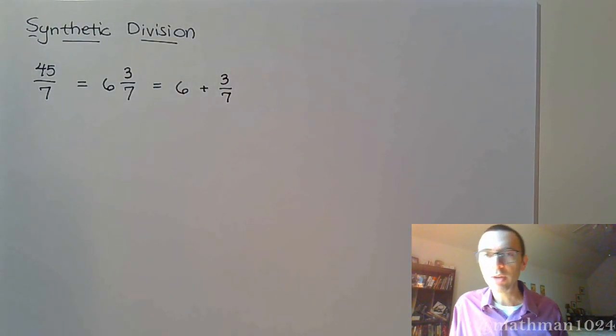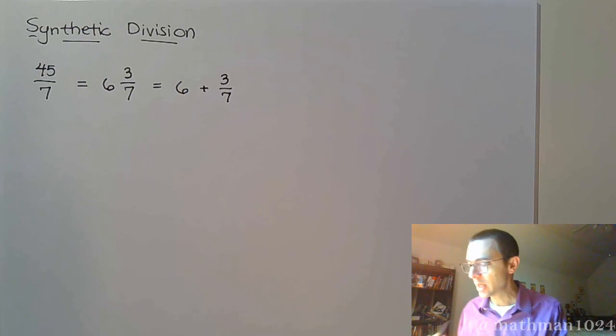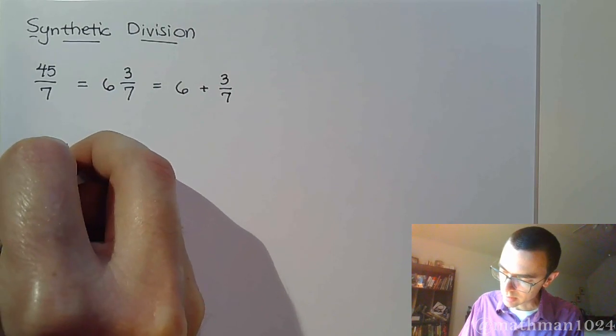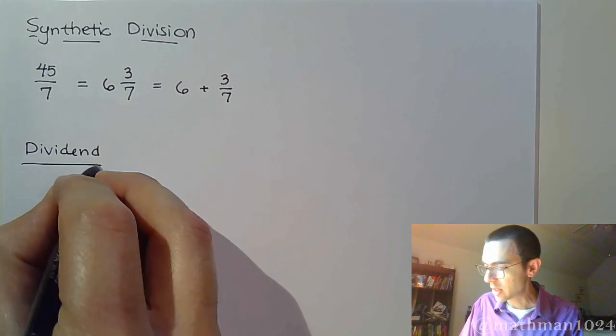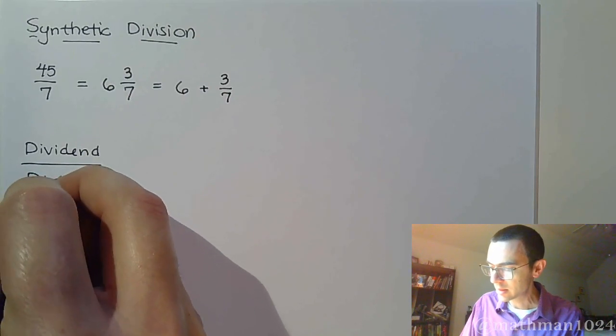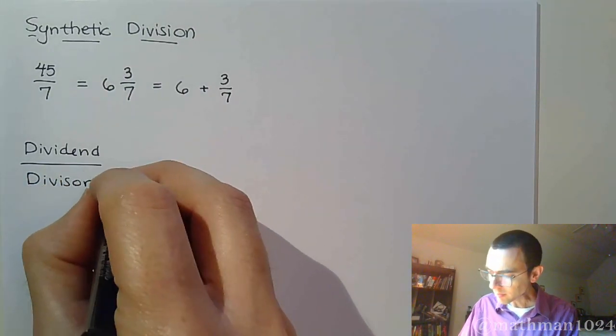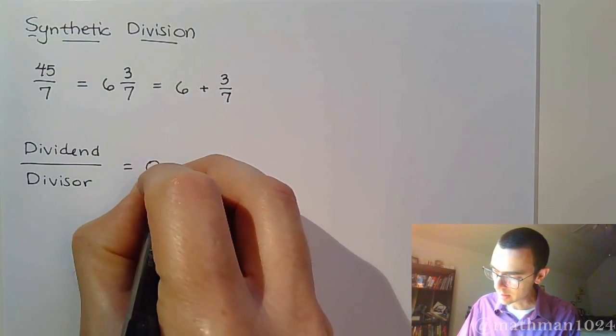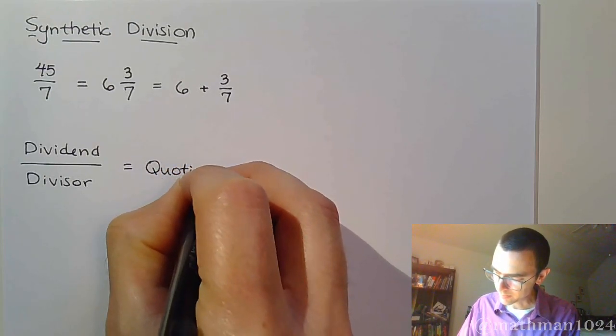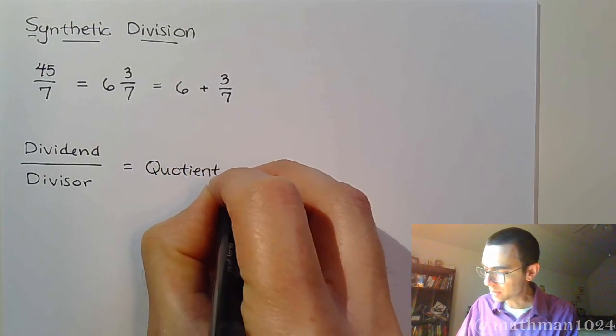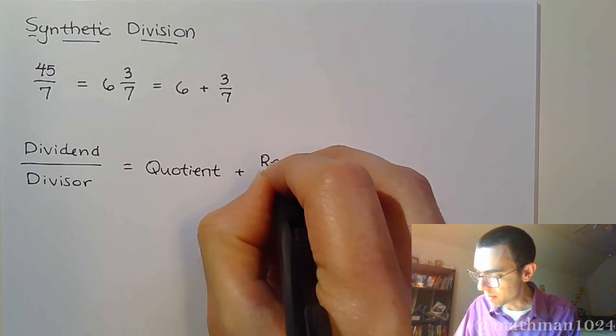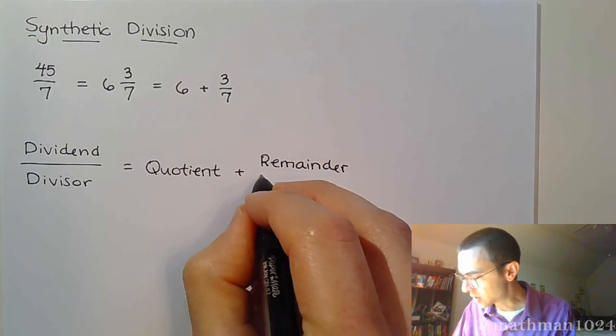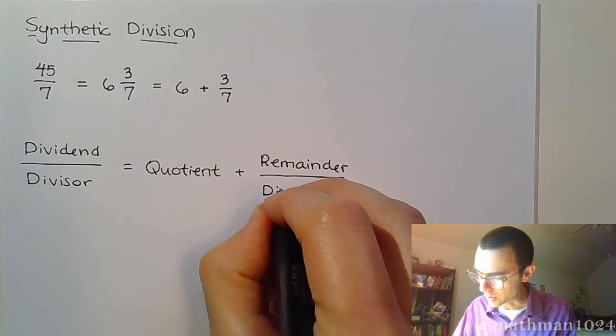Now, in terms of the terminology that we have here, 45, that numerator, is your dividend. What you're dividing by is called the divisor. This whole number part right here is called the quotient. And then you've got plus, so that 3 is the remainder. It's the remainder that we get from doing the long division, and it's over your divisor.